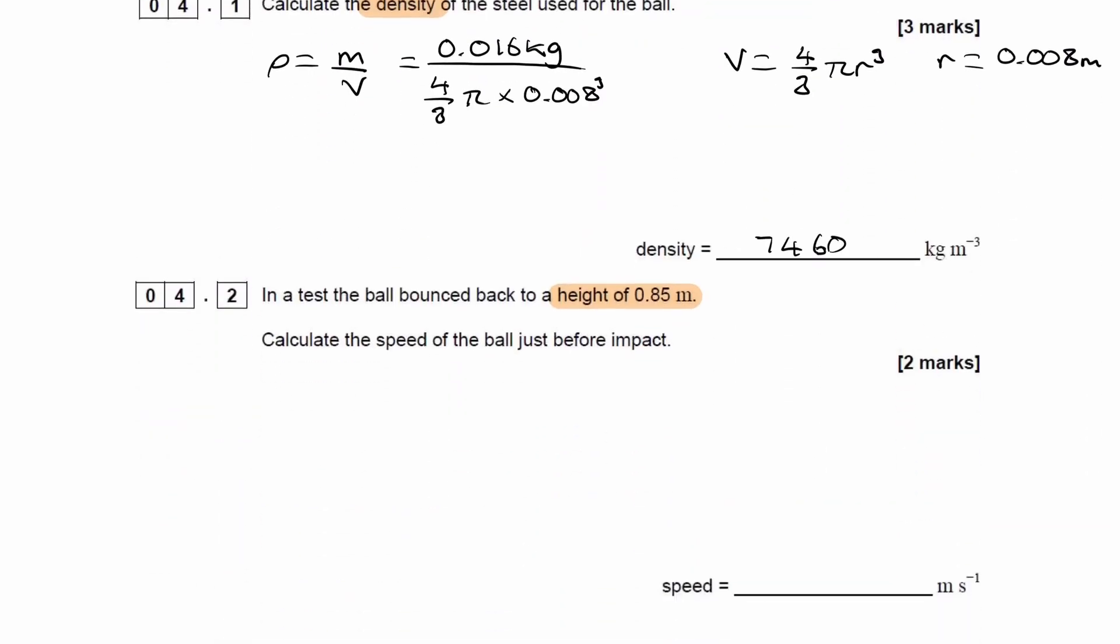So actually, if we want to work out the speed just before impact, then what we're going to have to do is consider the distance it falls, rather than the distance it bounces back up to. The distance it bounces back up to depends on the material that it collides with, but to work out what the speed will be just before impact, we'd have to know the distance that it falls. That distance would be the 1.27.